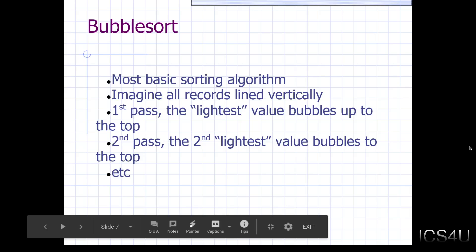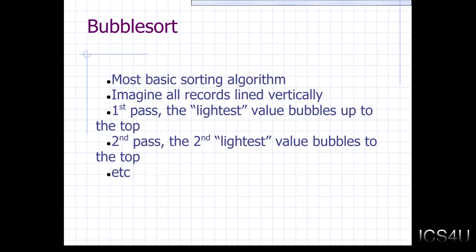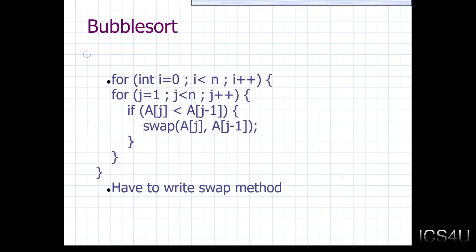But just know that the first pass, the lightest value bubbles up to the top, if that's the way you're implementing it. And the second pass, the second lightest value bubbles up to the top, et cetera. And there's some code that you might be able to use in Java to do it. I'm going to make this presentation available if you want to look at this later on. It's just a nested for loop. And in the nested for loop, we compare adjacent values and we swap them. And you have to write a swap method in order to use this. But that's something that we can easily do.